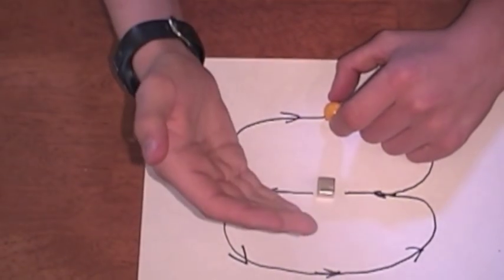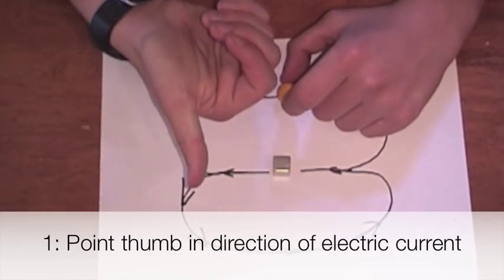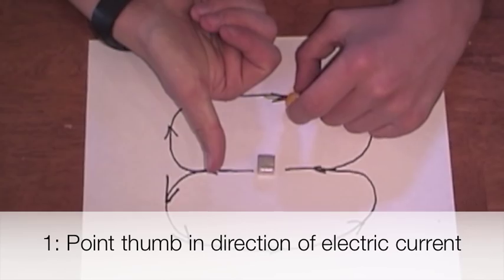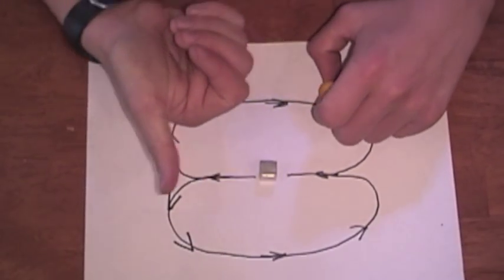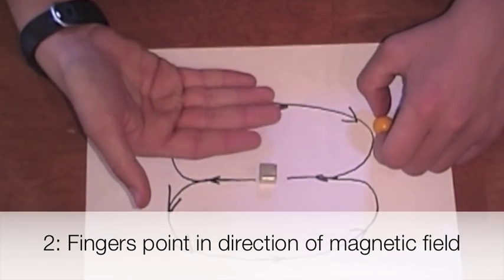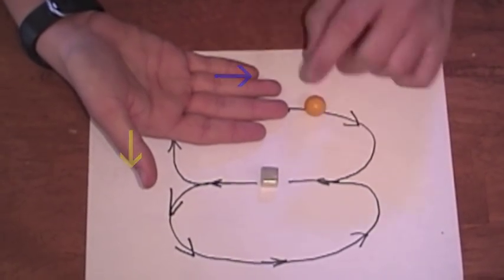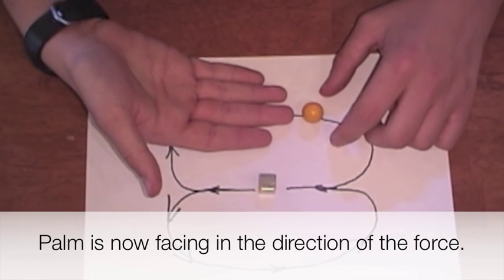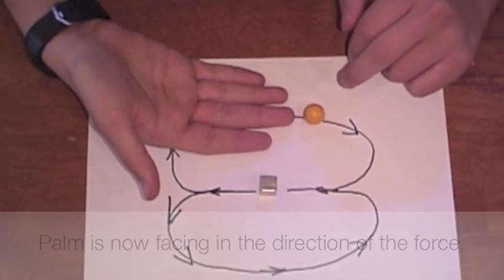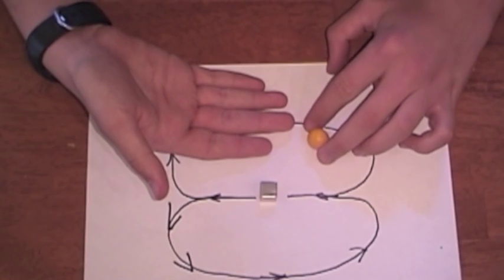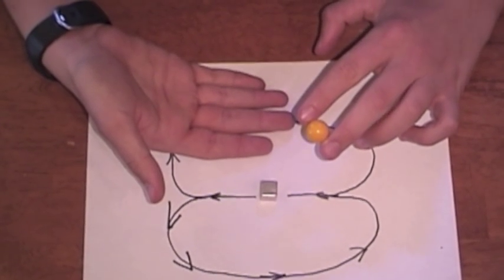What you do is you take your right hand and you point your thumb in the direction of the electric charge's motion. And then you take your other fingers and point them in the direction of the magnetic field. Now, your palm is facing in the direction of the force. So in this case, the electric charge will experience an upward force towards the camera.